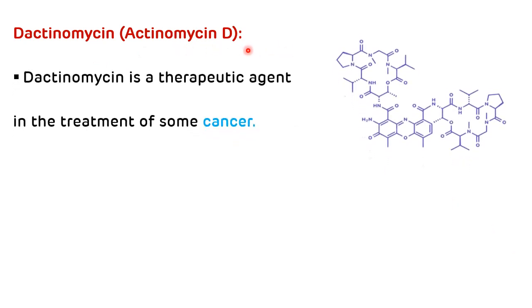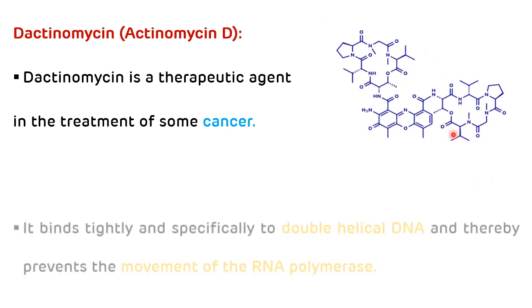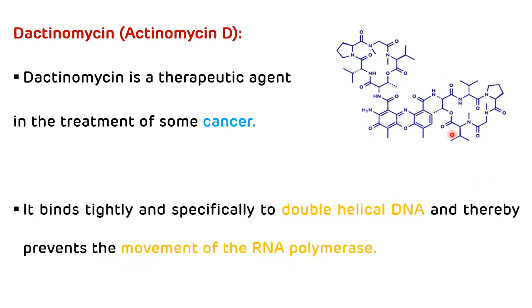This is the picture showing the structure of dactinomycin. It binds tightly and specifically to double helical DNA and thereby prevents the movement of RNA polymerase enzyme.